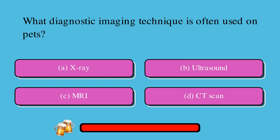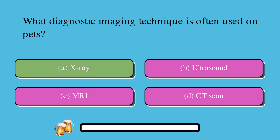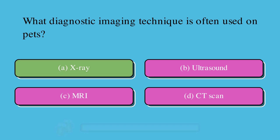What diagnostic imaging technique is often used on pets? A. X-ray, B. Ultrasound, C. MRI, or D. CT scan. The correct answer is A. X-ray.